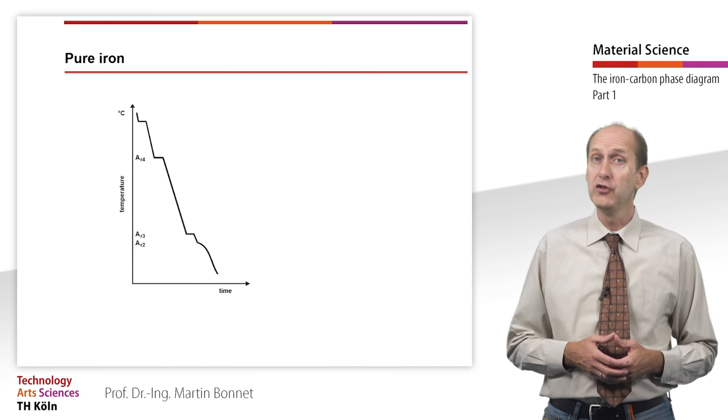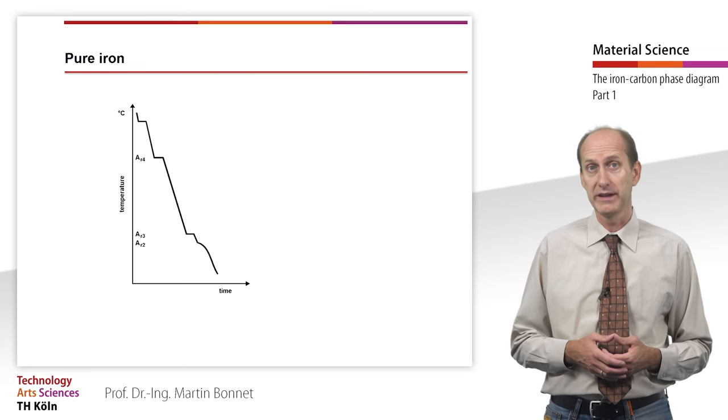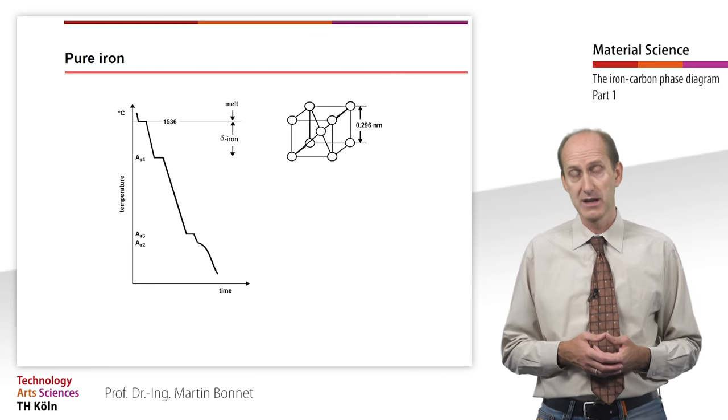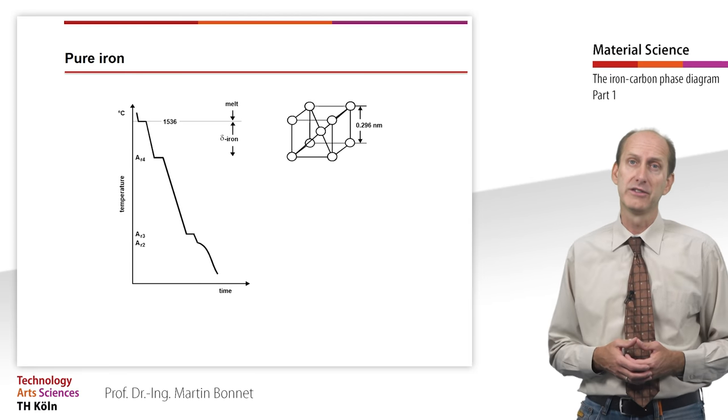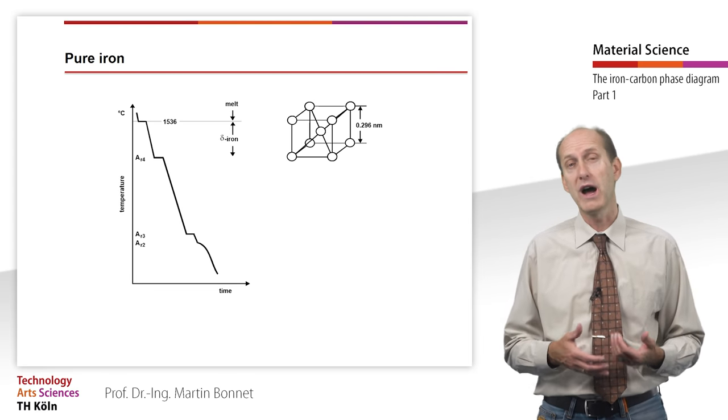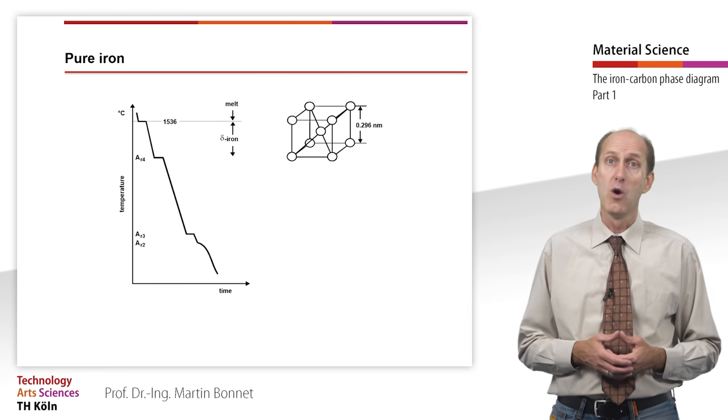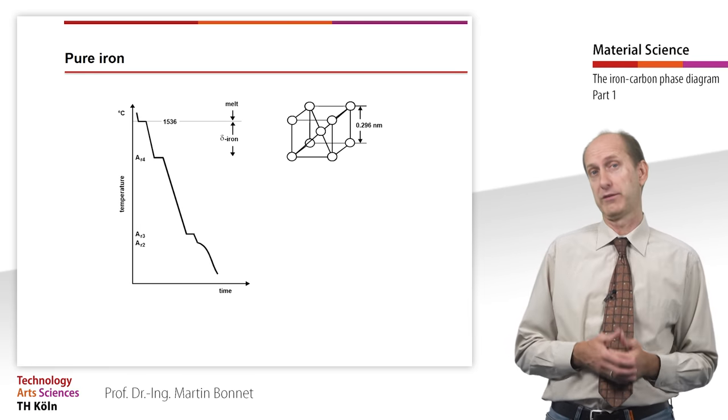Iron is one of the few polymorphous metals. That is to say it exists in different types of crystals. Unlike most other metals, the cooling curve of pure iron obtained by thermal analysis does not show one but three arrest points.